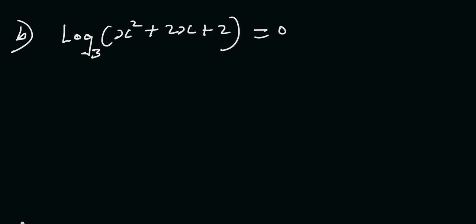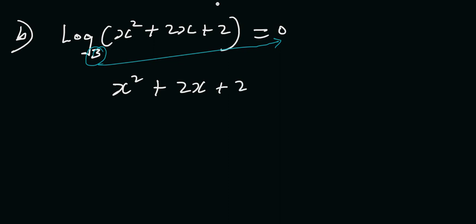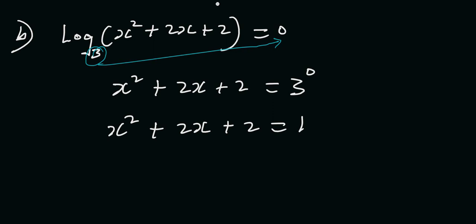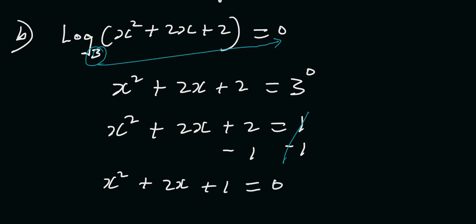Question B: we have log(x²+2x+2) to base 3 is equal to 0. First, recognize the base is 3. Switch it over and make 0 the exponent. So this becomes x²+2x+2 = 3⁰. Any number to the exponent 0 is 1, so x²+2x+2 = 1. Now let's subtract 1 from both sides, which gives us x²+2x+1 = 0.